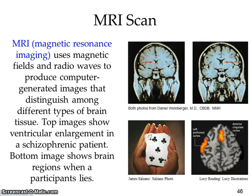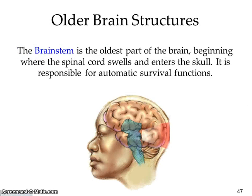To remember a PET scan: it looks at glucose — sugar. An MRI is magnetic, easy to remember. A CAT scan or CT scan is just an X-ray of your brain. There are a few extra imaging types worth knowing — better to be safe than sorry.